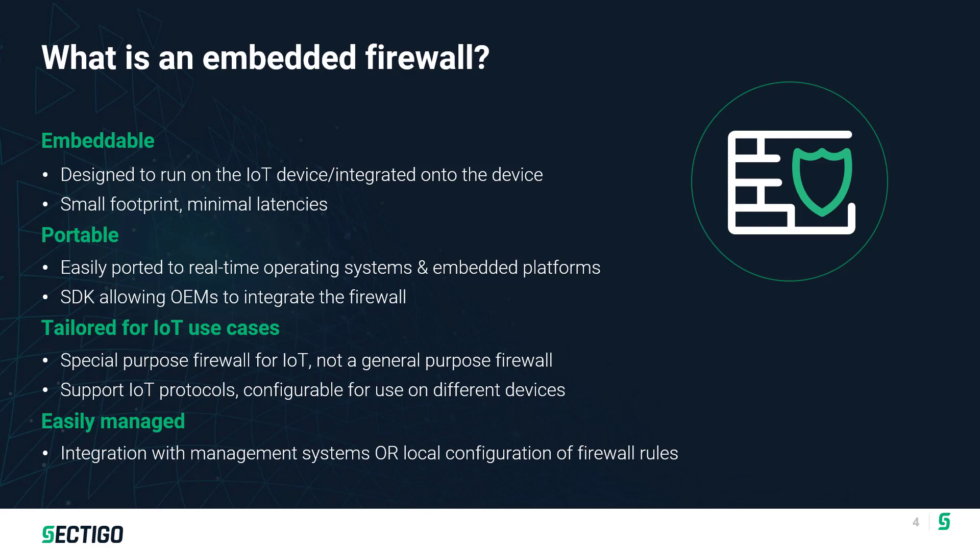It needs to be able to run on a variety of devices. At Sectigo, we've developed an embedded firewall with the goal of running it on a variety of embedded platforms. It can run on really any real-time operating system, it can integrate with any TCP/IP stack or Ethernet capability, or Wi-Fi — whatever the communication mechanism of the device. It's a small-footprint firewall specifically designed for IoT devices, not for general IT firewall use cases, but it works great for small-footprint, resource-limited IoT devices.